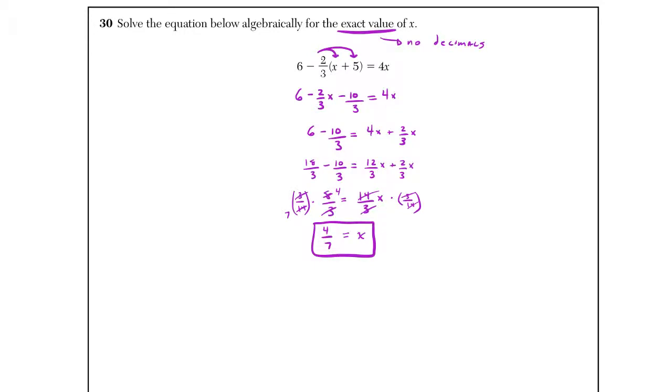Kind of just like when questions say that with radicals. We don't want to write as a decimal. Same thing here. We don't want to write the decimal equivalent of 4 7ths.